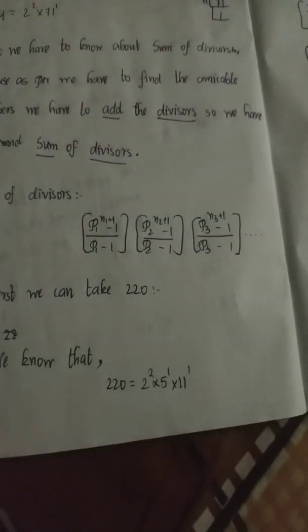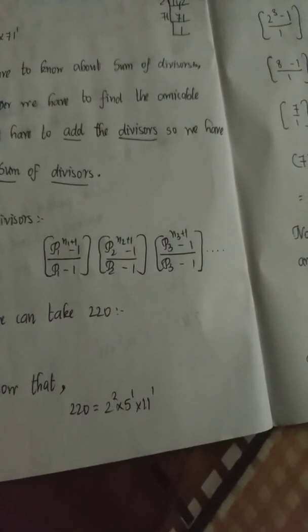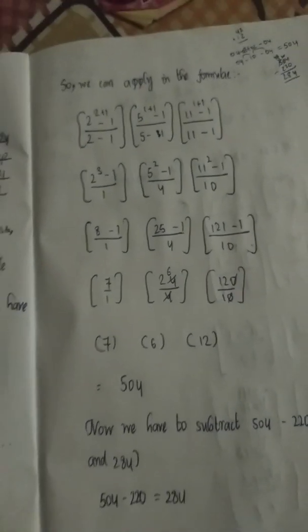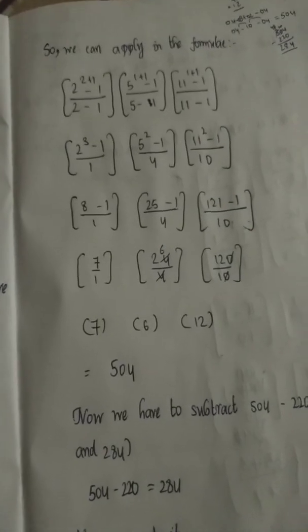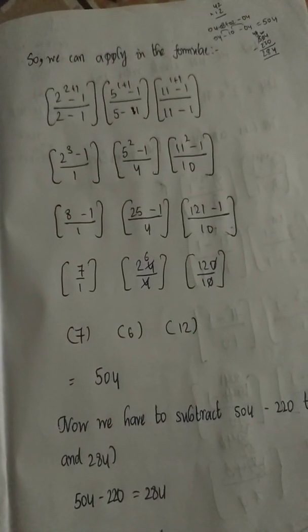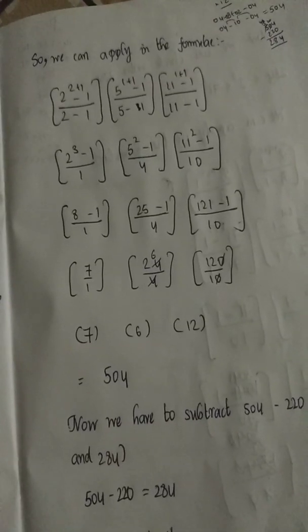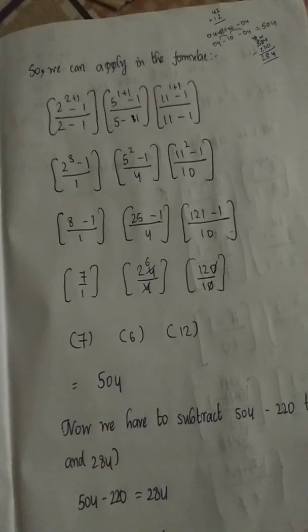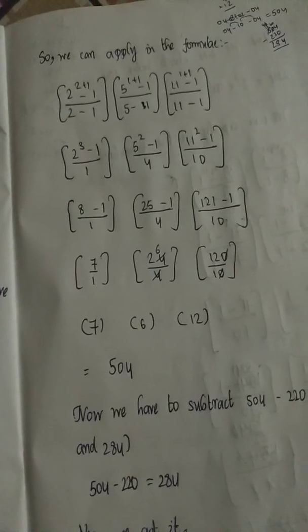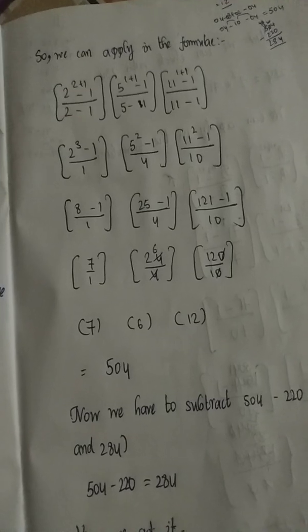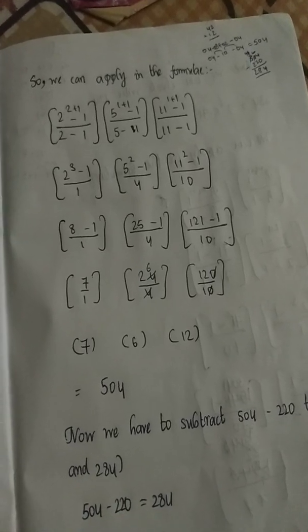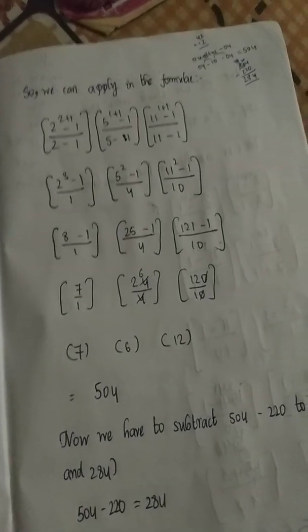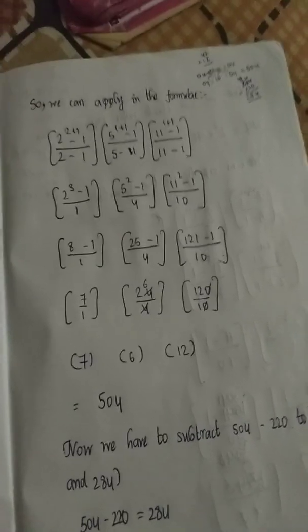First we take 220. We know 220 = 2 power 2 into 5 power 1 into 11 power 1. Applying the formula: (2^(2+1) - 1) / (2 - 1) into (5^(1+1) - 1) / (5 - 1) into (11^(1+1) - 1) / (11 - 1), which gives (2^3 - 1)/1 into (5^2 - 1)/4 into (11^2 - 1)/10.